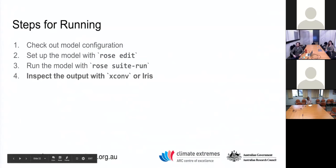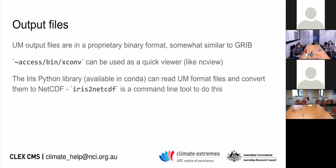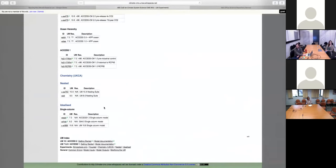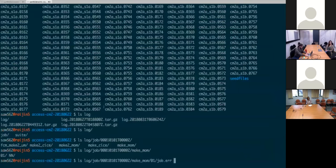Once you've done the run and got output, you probably want to do something with it. The UM outputs in a binary format, and it's generally not worth your time trying to read that directly — instead you want to convert it to NetCDF. If you just want to quickly view it, there's a tool called xconv under '~/access/bin'. That allows you, like ncview would, to quickly see what's in a file. I'll go to the output directory at 'share/data/history/data'.